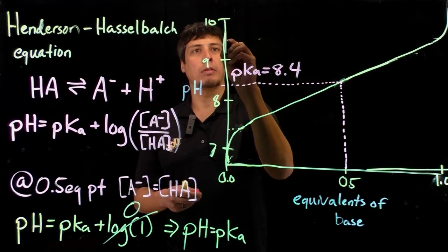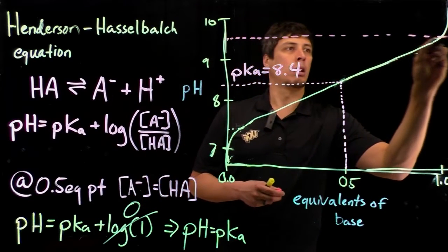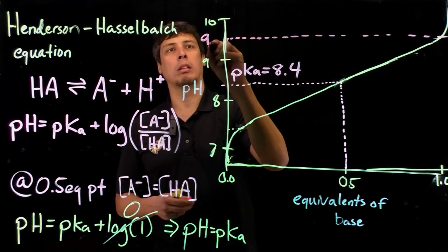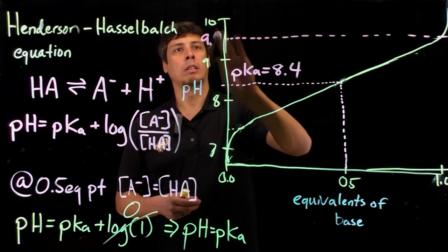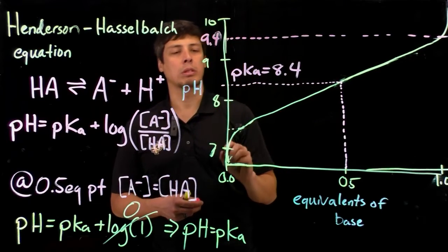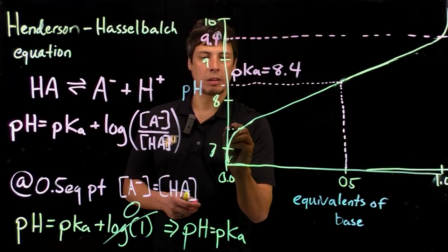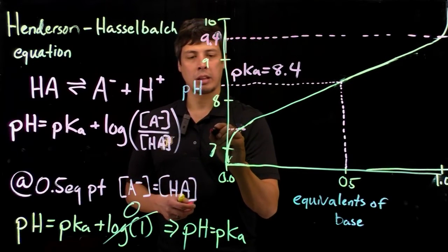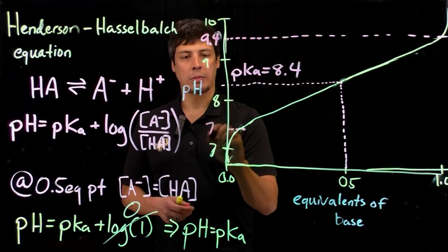The buffering range extends plus or minus 1 pK units. We would expect that the buffering range would extend up to 9.4 on the basic side because 8.4 plus 1 is 9.4. And then on the acidic side, 7.4.